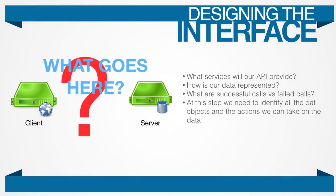The first step in writing an application is deciding what your program will accomplish. You decide what services your API will provide, how it will return data, and determine what represents success or failure for each call. We will start with use cases to help us scope what information needs to be exchanged between the client and the server. This step doesn't have a tool per se, but I will provide you with a template to fill out in future videos. This template will help you identify your resources — the nouns of your application — and identify which HTTP verbs apply to those resources. Basically, this is the design step.